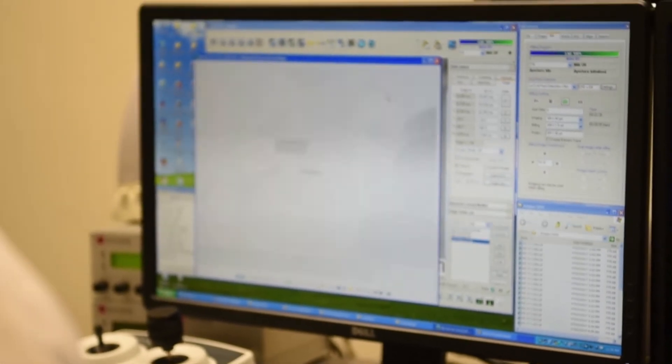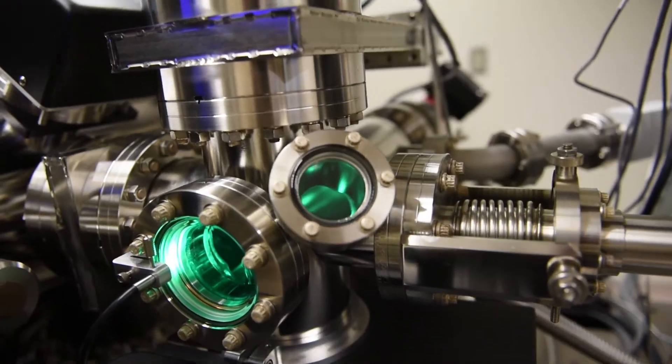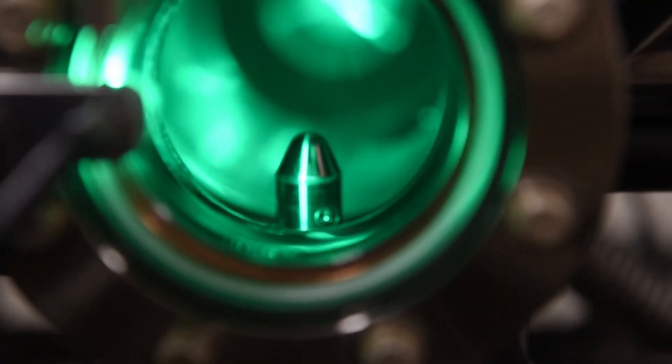One other instrument we have, which is fairly unique and it's the only one in Canada, is an atom probe tomography machine. This tool allows us to look at a material's microstructure in 3D at the near atomic scale, at the sub-nanometer level.